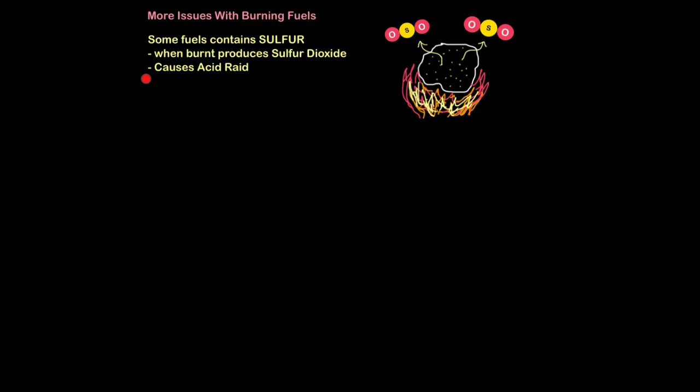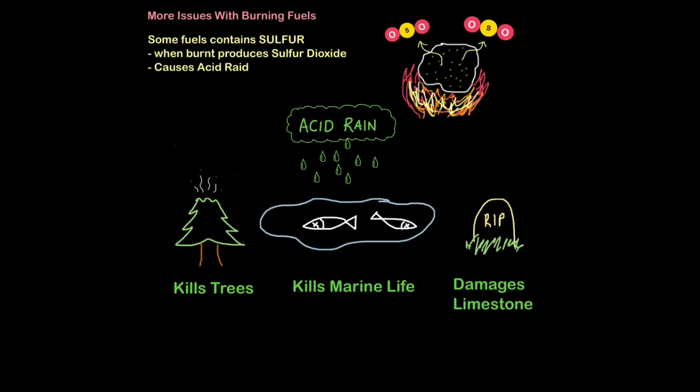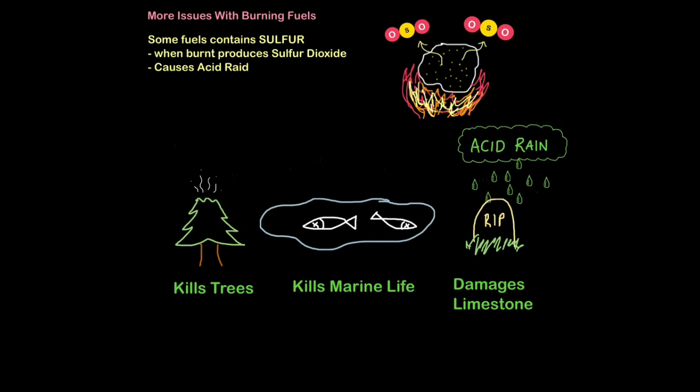And sulfur dioxide, when it basically reacts with water, produces acid rain. So when it reacts with the water in the atmosphere, it produces acid rain. Now, acid rain causes all sorts of problems. It basically kills trees, it strips the leaves off trees, it lowers the pH in lakes, and kills pond life and water life, marine life in general, fish, plants, all sorts. And it can also damage constructions made from limestone, such as graves and buildings.